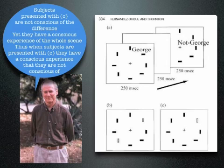Fred Dretsky famously argued that this change blindness result poses a problem for higher-order views. He reasons as follows: subjects are presented with figure C and have plenty of time to observe it, so they have a conscious experience of all the rectangles — but they're not conscious of the difference. So they have a conscious experience of all the rectangles, but they're not conscious of that experience. Therefore, higher-order views have a problem.